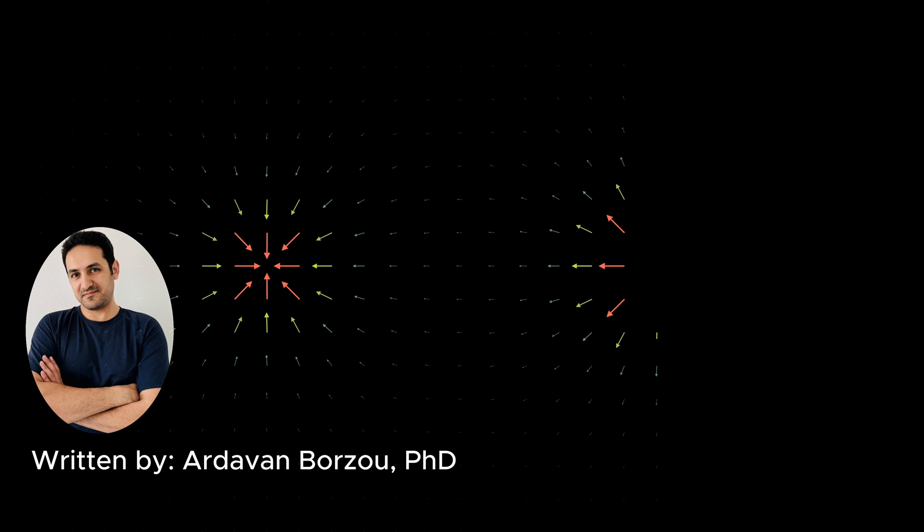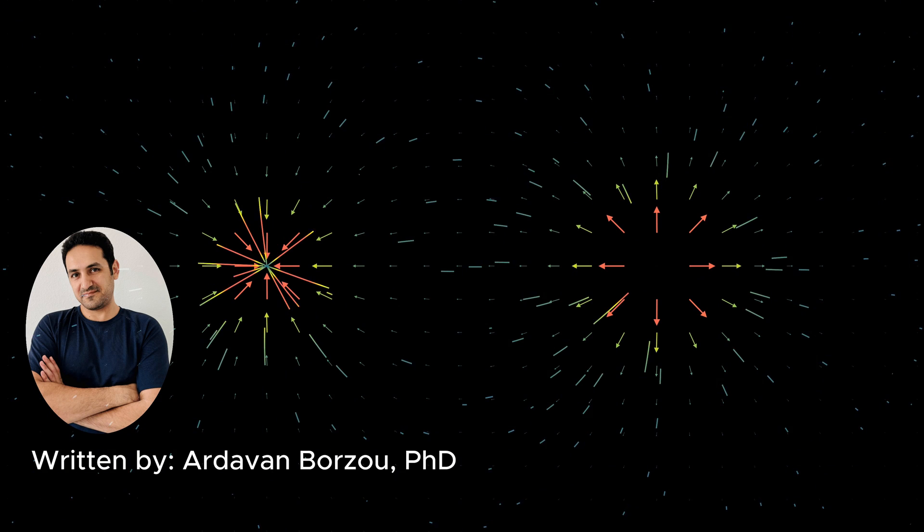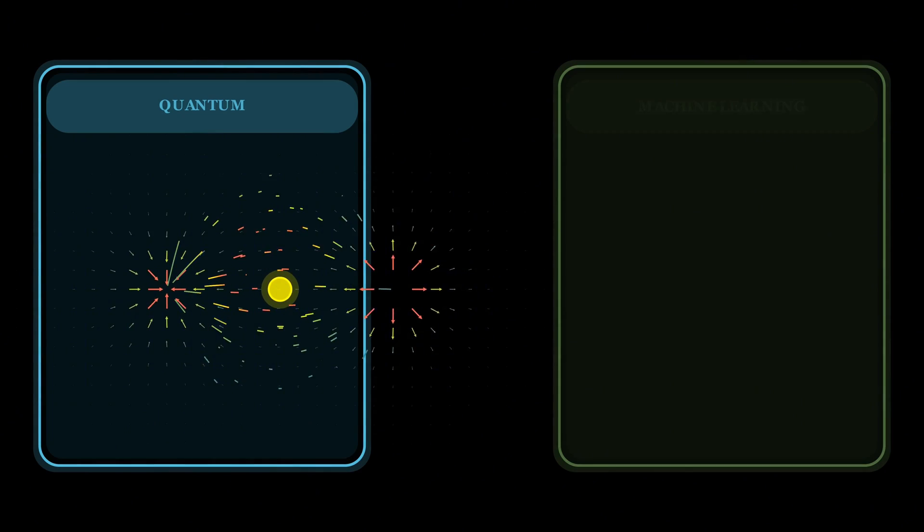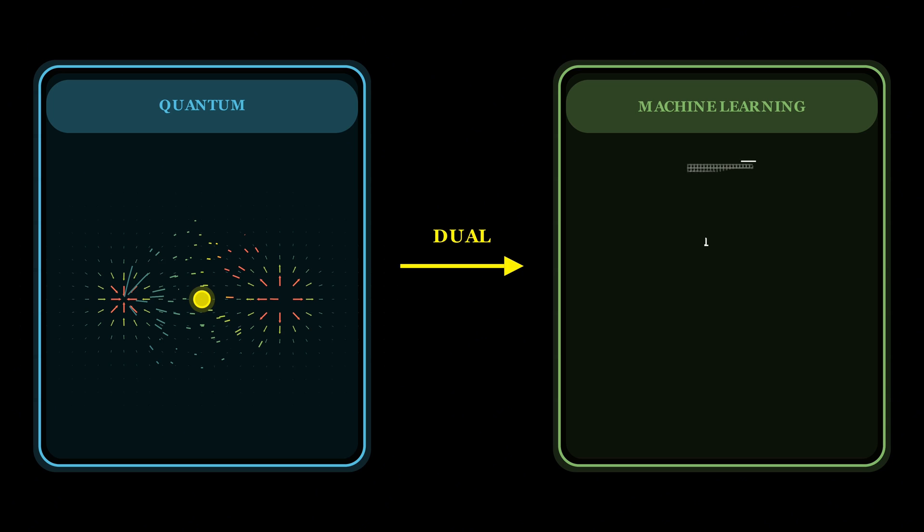Imagine a magnetic field filling the space. Think of it as an invisible vector field surrounding everything. And inside this field, imagine there's a massive particle that carries a spin of one. Now here's the surprising part. This simple-looking quantum system, a spin one particle in a magnetic field, is mathematically dual to a machine learning classifier that can classify three objects.